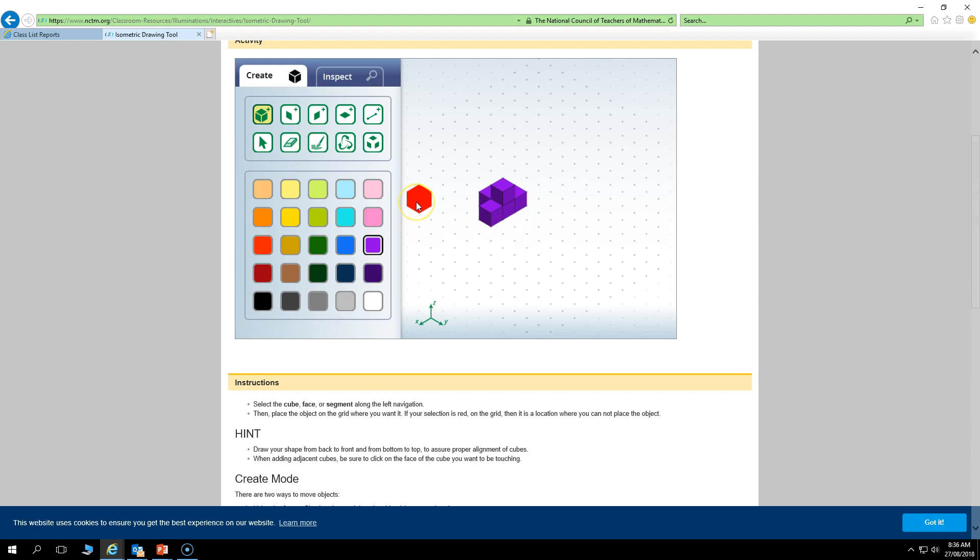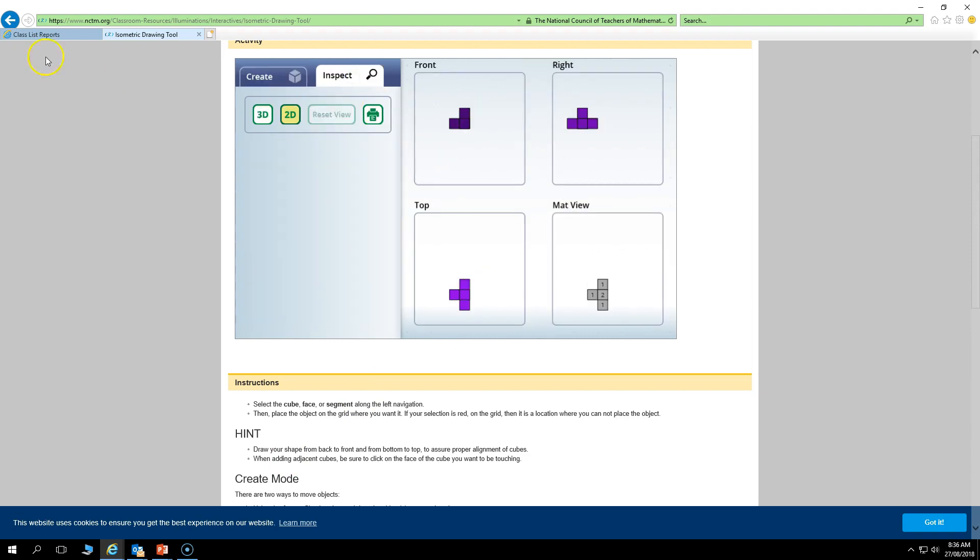You can use the interactive to see the different views of your 3D object. If you go inspect, make sure it's on 2D. This is our front view, this is our side view, and our top view.